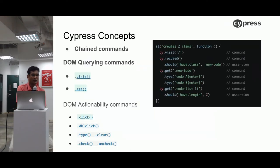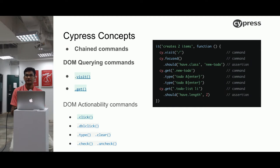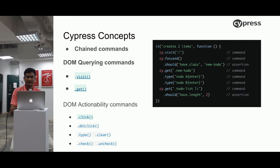We have commands in Cypress as well. There are different querying commands that query the DOM. We have 'visit' to go to a particular website or path, and 'get' to look for a specific element within the DOM, and then we can perform actions on it. There are actionability commands: we can click on an element, double-click, type text in an input field, clear the input field, and check or uncheck checkboxes. As you can see in the code block, the 'visit' command specifies the relative path — the absolute path is picked from the base URL configured in cypress.json.